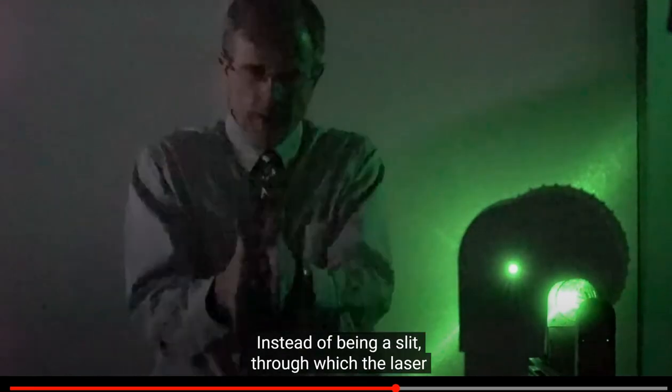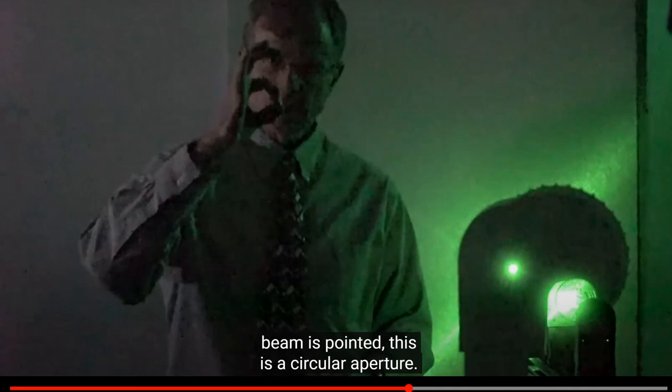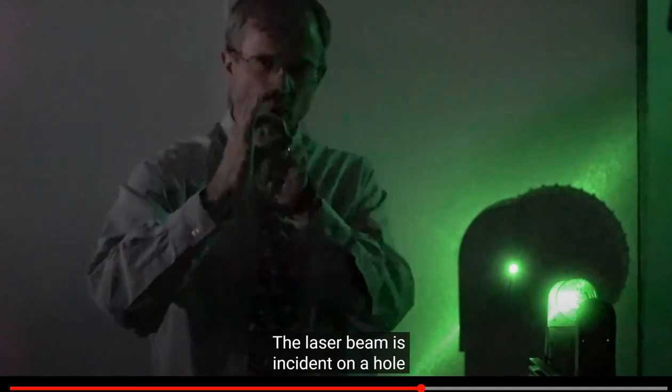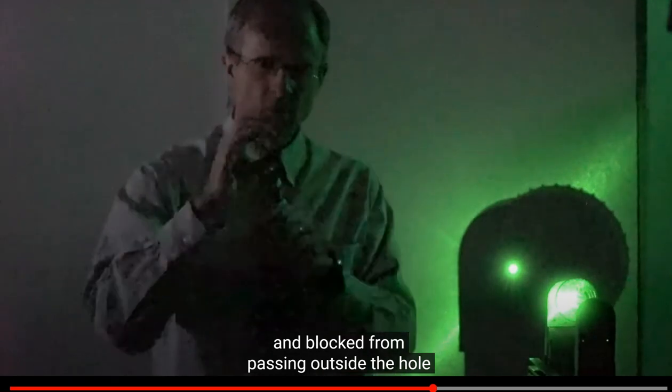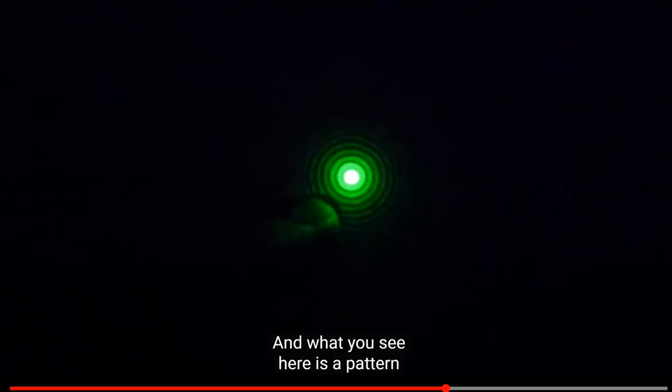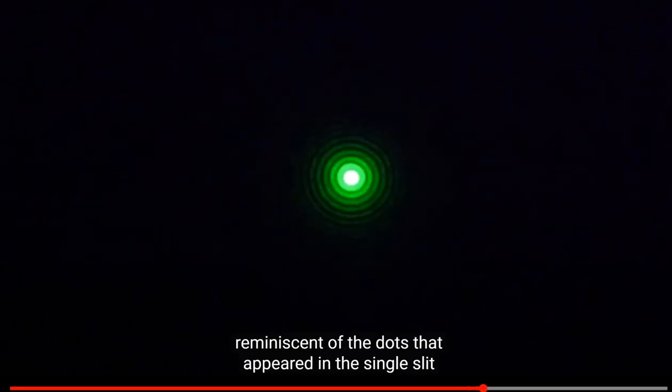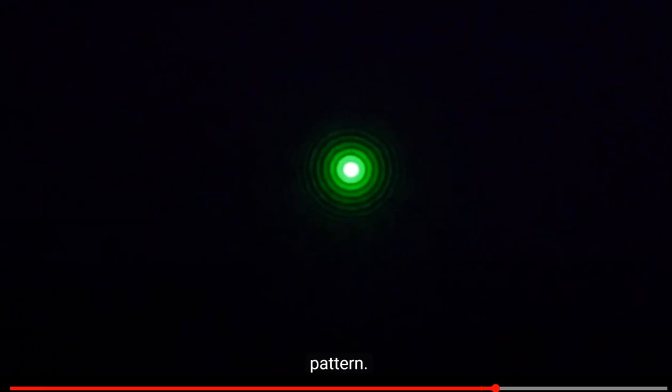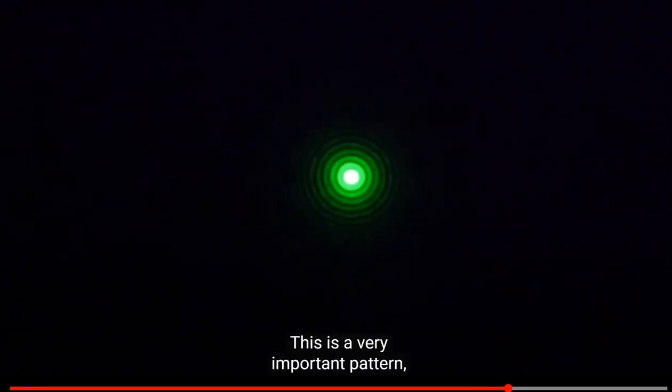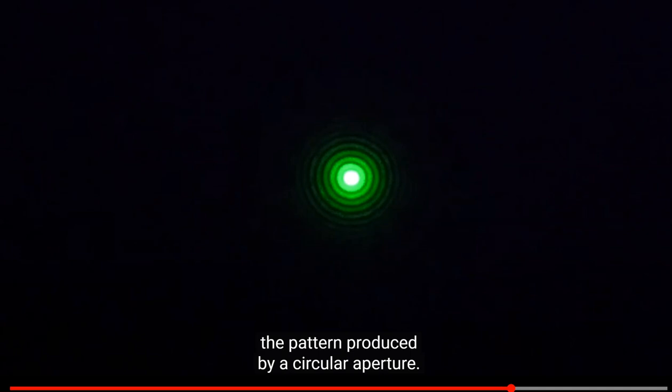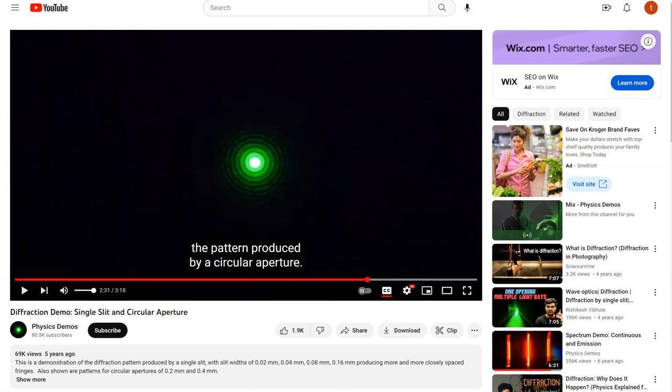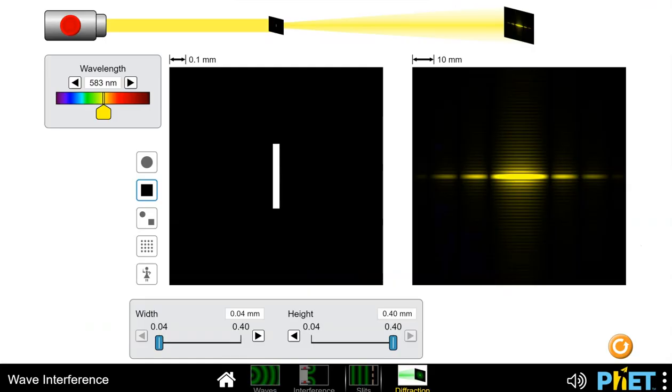So this is a circular—instead of being a slit through which the laser beam is pointed, this is a circular aperture. The laser beam is incident on a hole and blocked from passing outside the hole and only goes through that hole. And what you see here is a pattern with a central bright spot in the middle, but then rings around it that are reminiscent of the dots that appeared in the single-slit pattern. This is a very important pattern. We're going to talk about the importance in a little bit. I will explain the same thing he mentions. I want to come back, though, to the simulation.